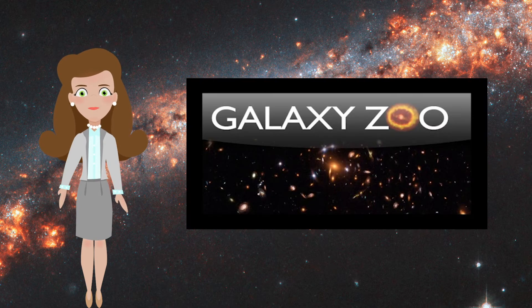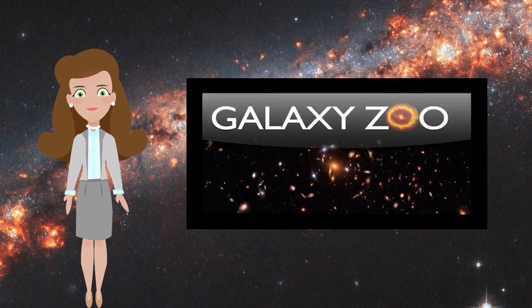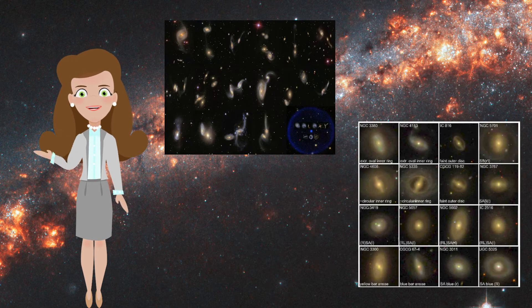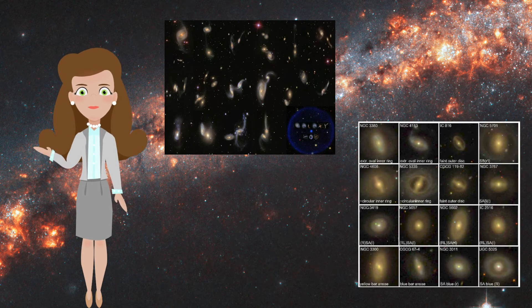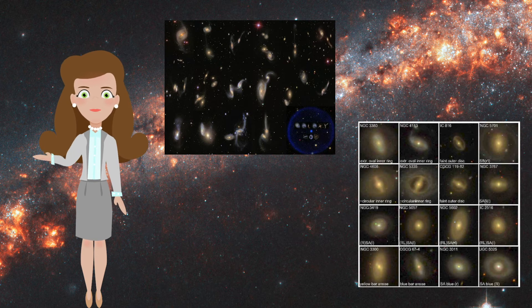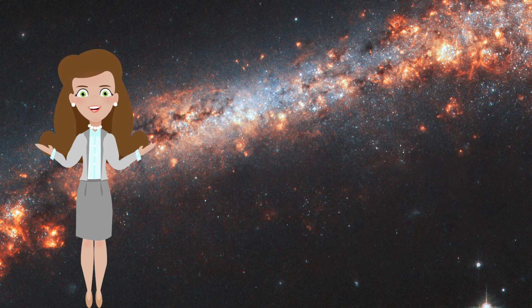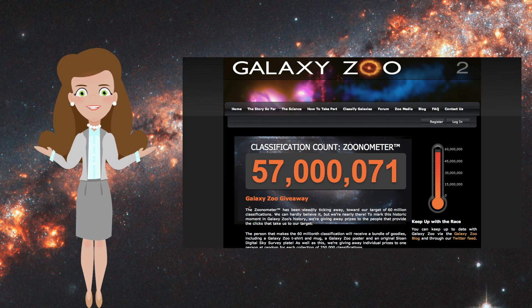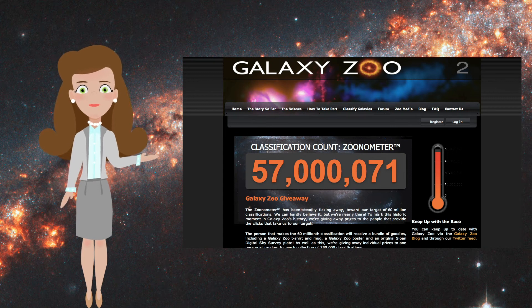In 2007, Galaxy Zoo was created. A group of astronomers needed a ton of photos of galaxies to be analyzed, but it was going to take them years to do it on their own. They decided to reach out to volunteers online. In 175 days, the volunteers had identified almost every galaxy in the photos almost 40 times.